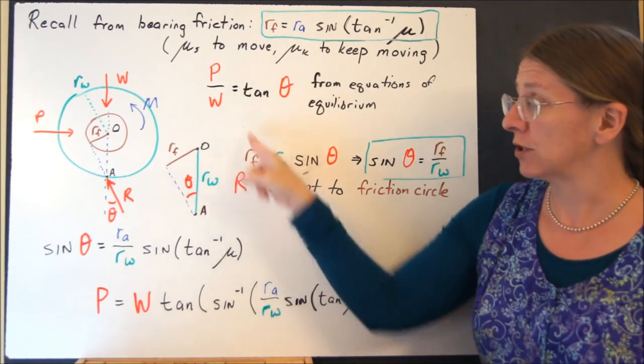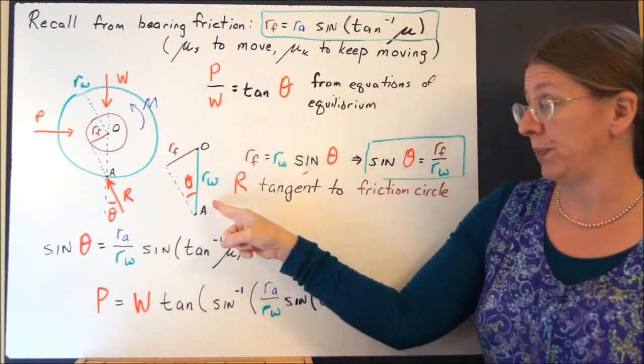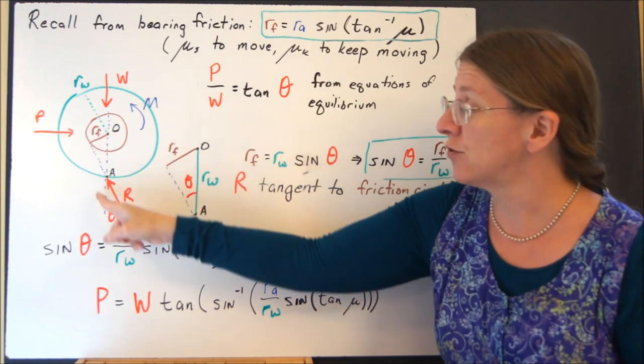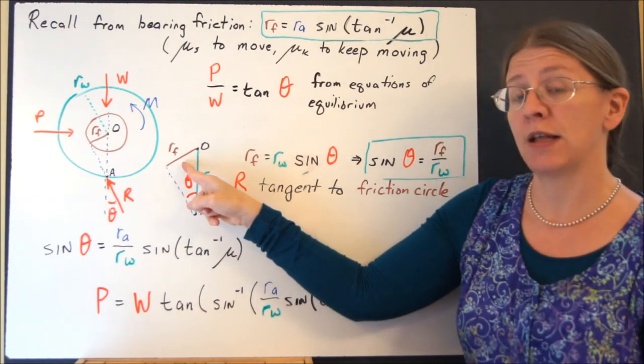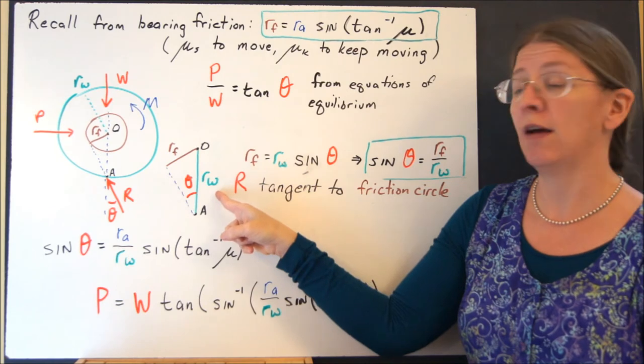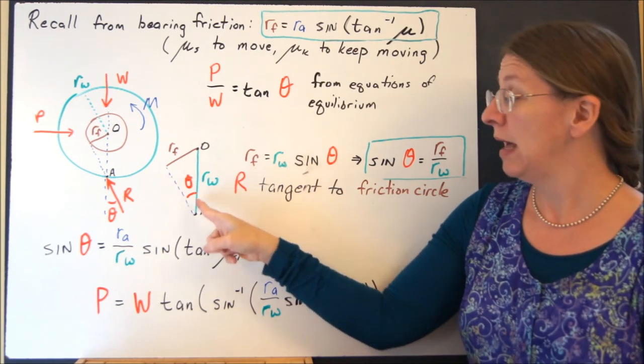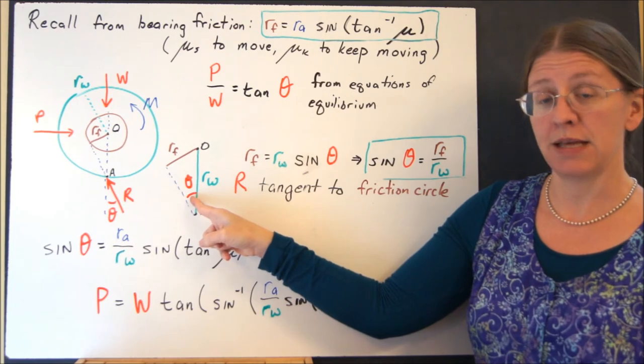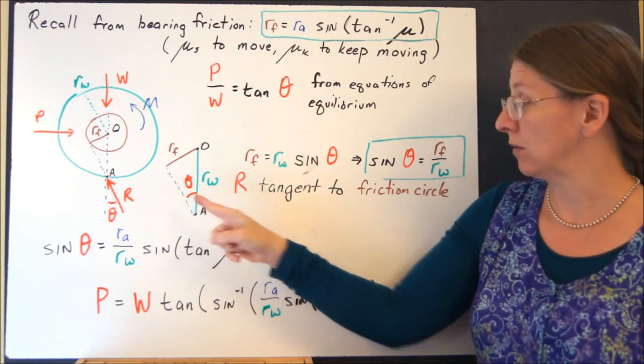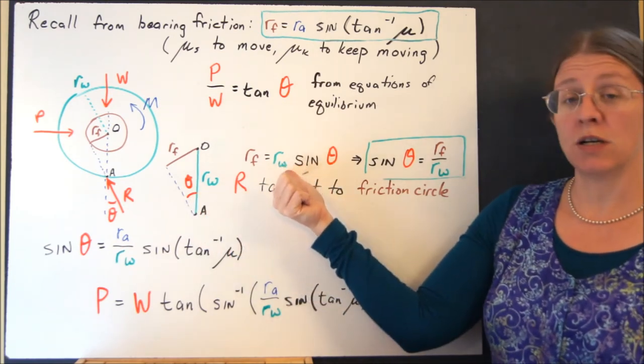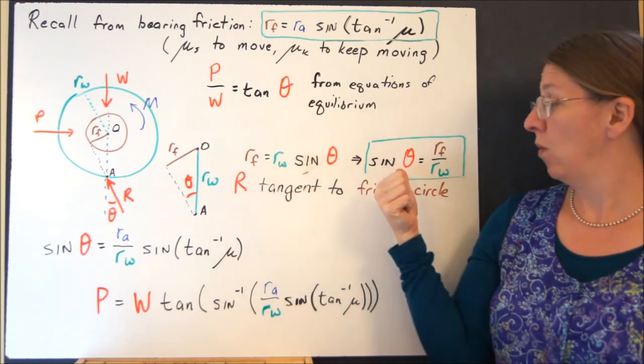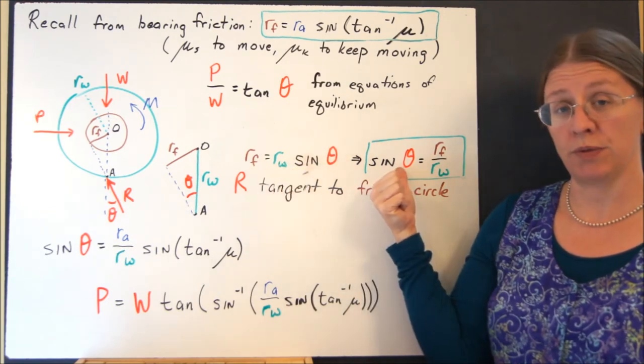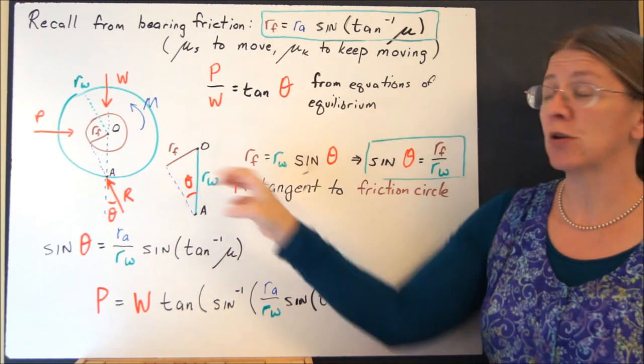Now in this picture, what is Rf equal to? Here's my new triangle, where I have Rf, that's the radius of the friction circle. Rf, W is the radius of my wheel. And alternate interior angles, this is theta. That's the angle R is making with the ground. So Rf is Rw sin theta, or sin theta is Rf over Rw. That comes from the geometry of my problem.